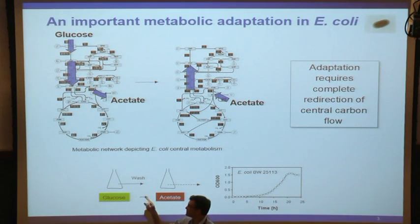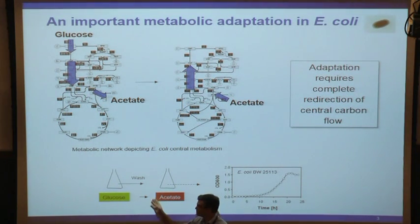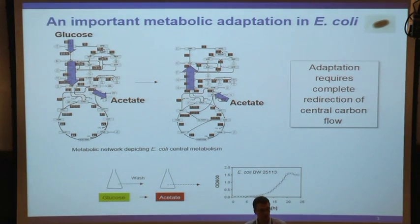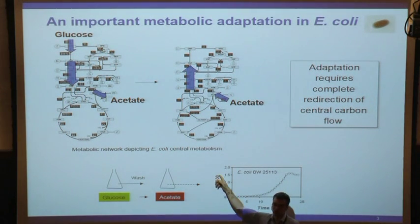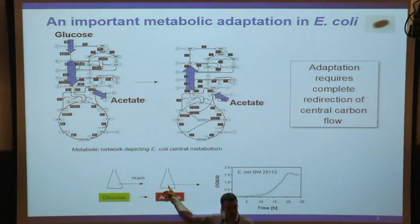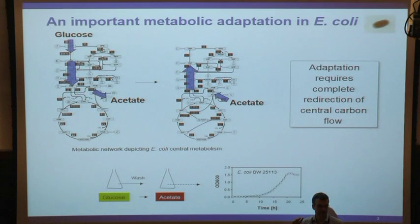We would spin the cells down in a centrifuge, wash them a couple of times, and then put them into the new environment. Very simple experiment. What we could measure in this new environment is the number of cells as it develops over time - measuring the turbidity of the culture, which is the optical density. If we follow the optical density as a function of time, we would get something that looks like this.